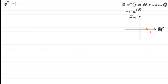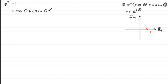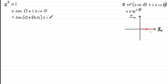Representing 1 in mod-arg form: r equals 1, and the argument θ is zero radians, so we write 1 as cos(0) + i·sin(0). But we could add any multiple of 2π to the argument and still get the same result. So we rewrite this as cos(0 + 2kπ) + i·sin(0 + 2kπ), where k is an integer.